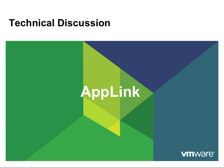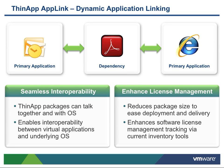AppLink is a very simple way of defining how applications can communicate with each other. Applications can seamlessly be integrated by merely pointing the primary application to look in a particular folder or folders for the dependency that it requires. The interoperability between ThinApps also means that more than one primary application can use a single dependent ThinApp, reducing the amount of physical disk space required to deploy an application.